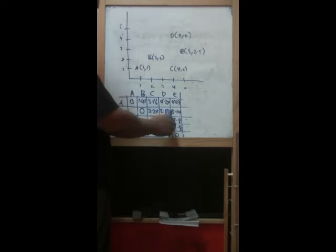And C to C is 0. C to D is 3.0. C to E is 1.8. And D to E is 1.8. And these are the distance metric.